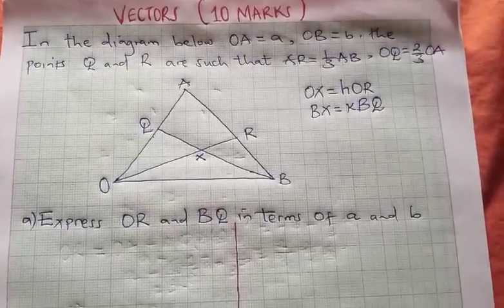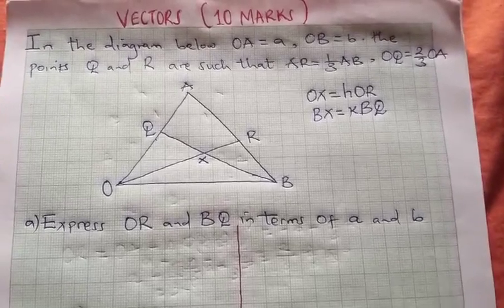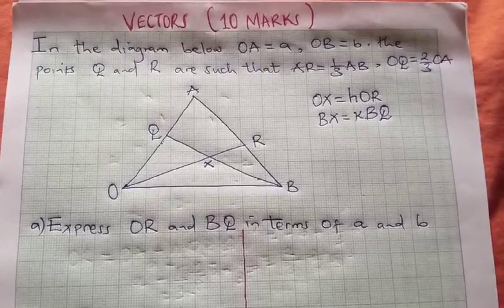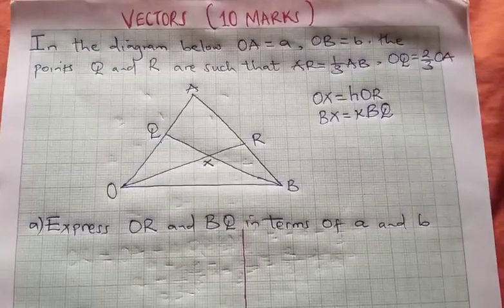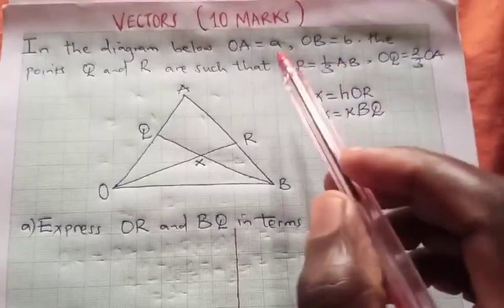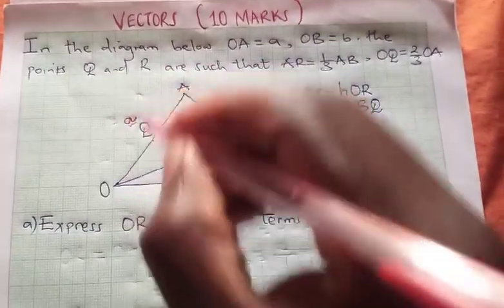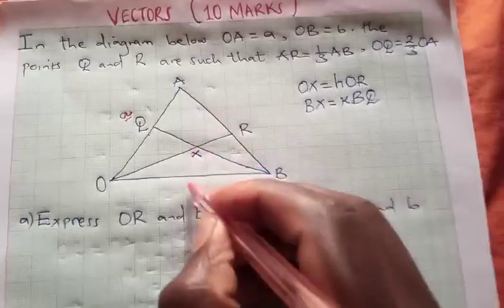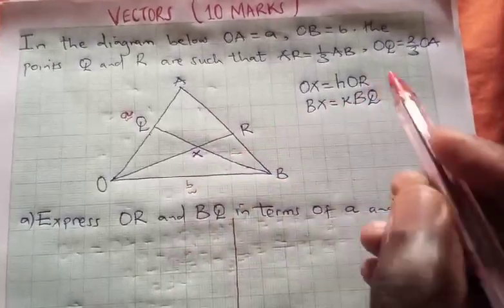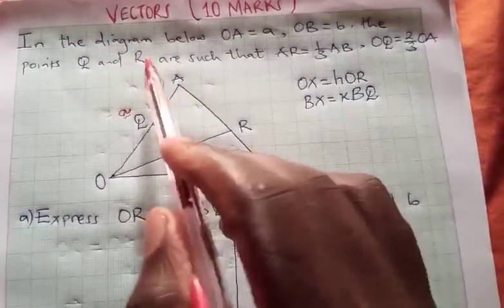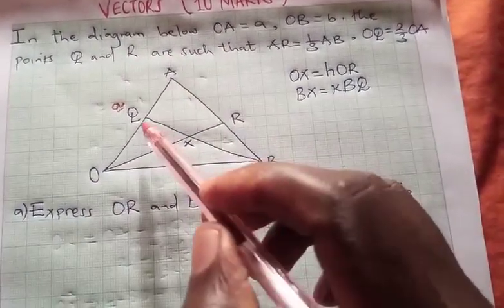In the diagram below, OA is given by vector a, so we are going to have vector a here, line OA. Then OB is given by vector b, we have vector b here. Then the points Q and R are such that AR is in fact a third of AB.